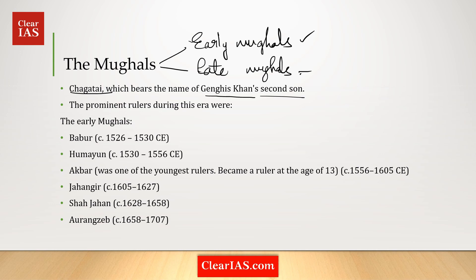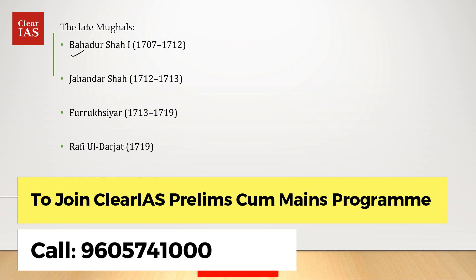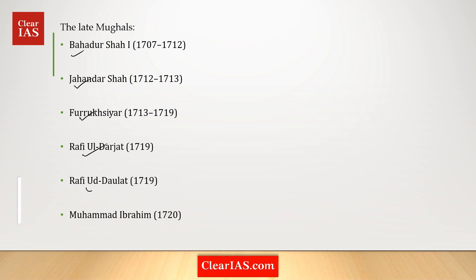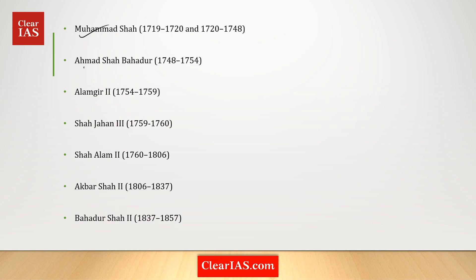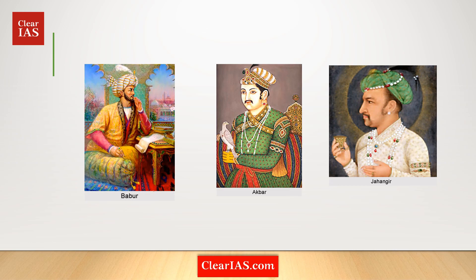The early Mughal rulers include Babur, Humayun, Akbar, Jahangir, Shah Jahan, and Aurangzeb. After Aurangzeb, all subsequent rulers belonged to the Mughal Empire but were essentially puppets of their ministers and European powers. Some late Mughal rulers are Bahadur Shah, Jahandar Shah, Farrukhsiyar, Rafi ud-Darajat, Rafi ud-Daulat, Muhammad Ibrahim, Muhammad Shah, Ahmad Shah Bahadur, Alamgir II, Shah Jahan III, Shah Alam II, Akbar Shah II, and Bahadur Shah II.